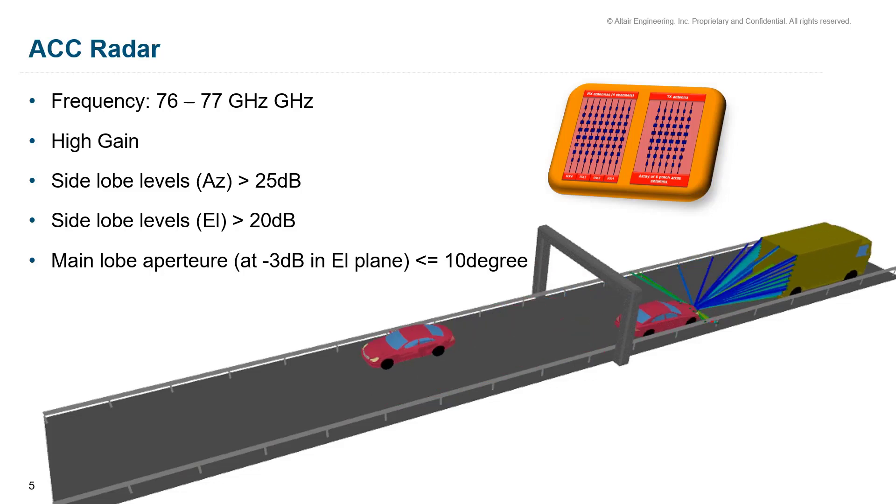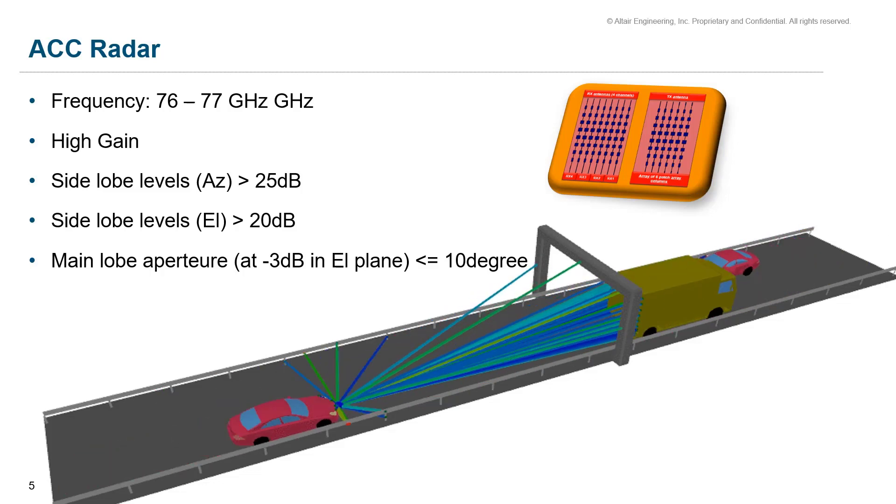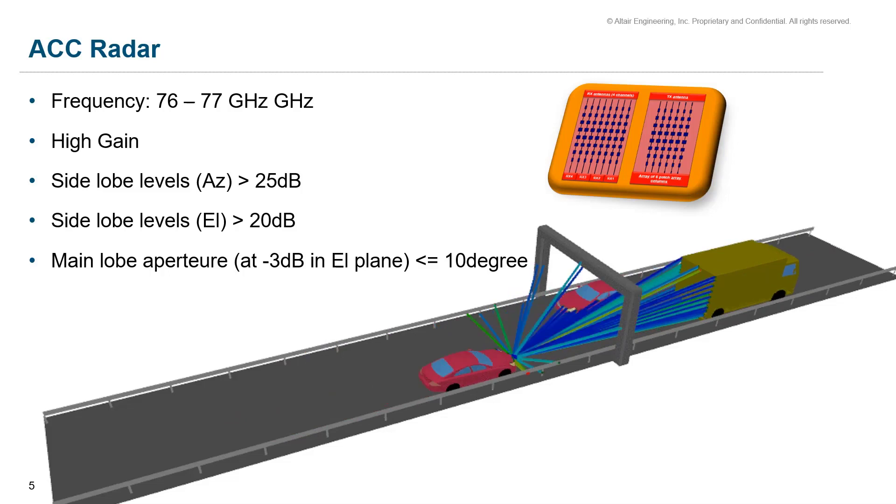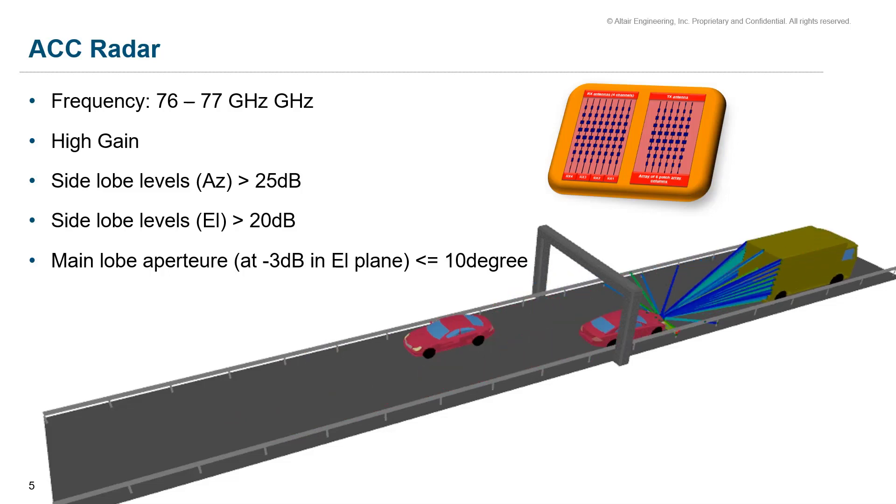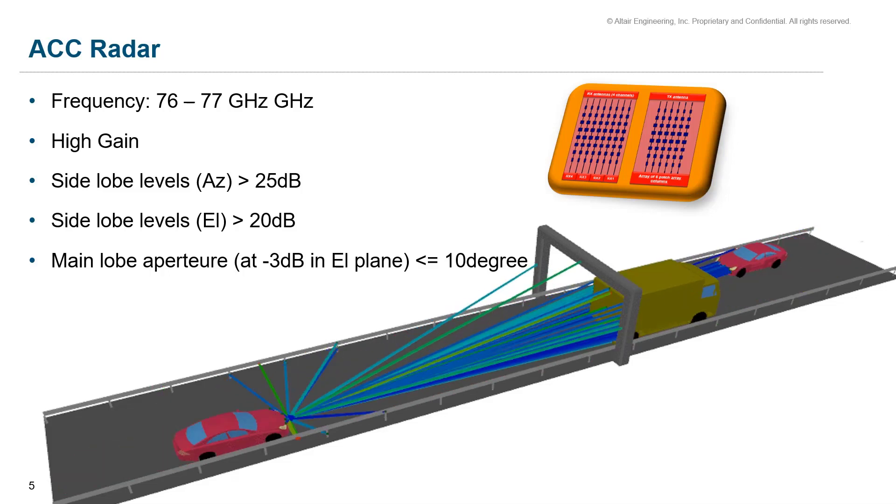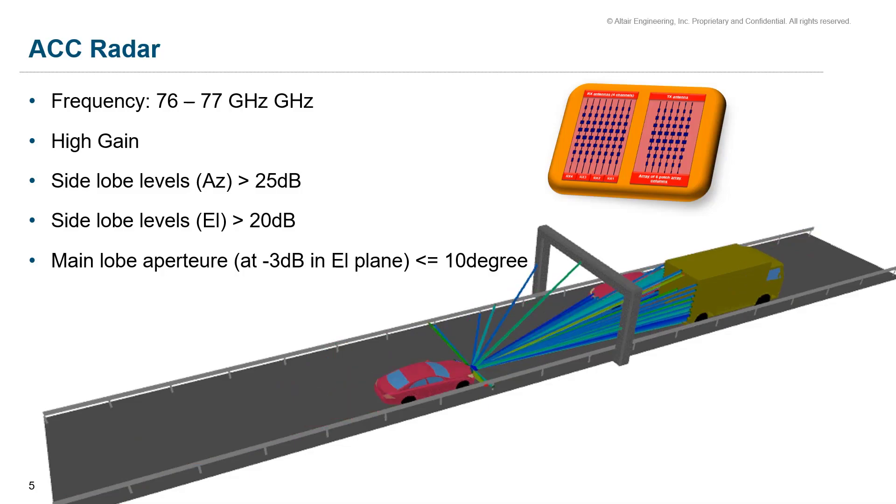In the azimuth plane, the side lobes level must be as small as possible to keep a margin avoiding artifact and a case of false detection.